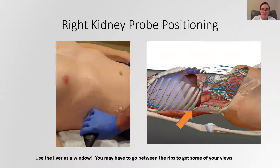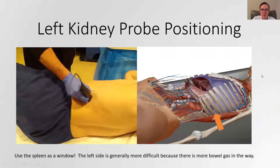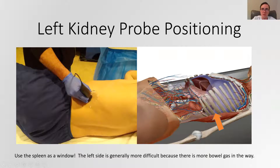Gas pockets are terrible windows because they cause a lot of shadowing, and sound waves just can't get through them very well. When looking at the right kidney, you want to either get under the ribs to look through the liver, or even between the 10th and 11th, or 11th and 12th ribs to find good windows. The left side is a little bit harder because your window is smaller — you have to use the spleen as a window to image that left kidney. Sometimes you have to be more creative in your positioning and have your patient roll up on their side to get the bowel gas out of the way.